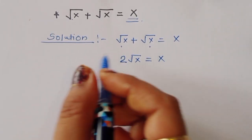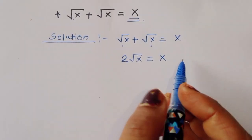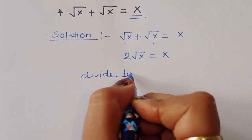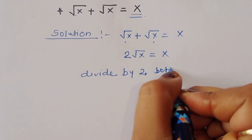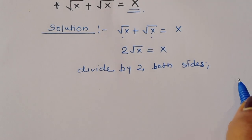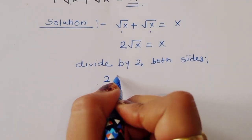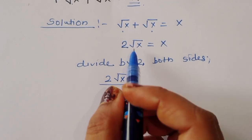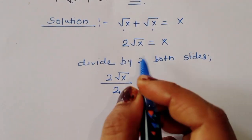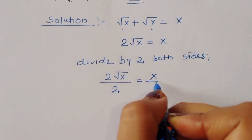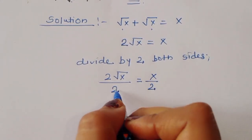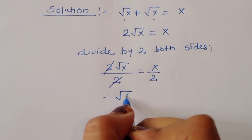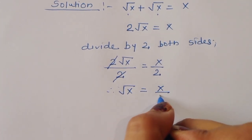Now we can divide both sides by 2. So 2 square root of x divided by 2 is equal to x divided by 2. The 2 cancels, therefore square root of x is equal to x over 2.